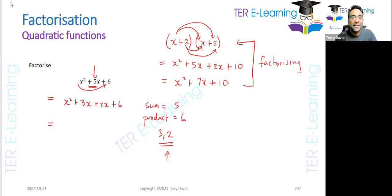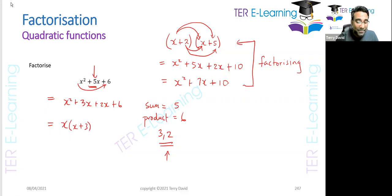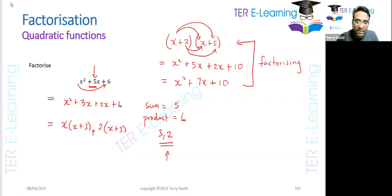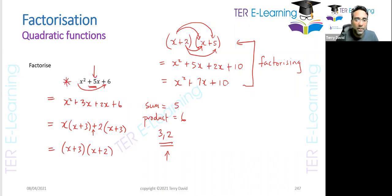Now I'm going to use the method of factorizing by grouping. Looking at the first two terms, I can factor out x, giving x(x plus 3). For the next two terms, I can factor out 2, giving 2(x plus 3). The two brackets are the same, so this has to be a plus sign. Therefore my final answer is (x plus 3)(x plus 2).